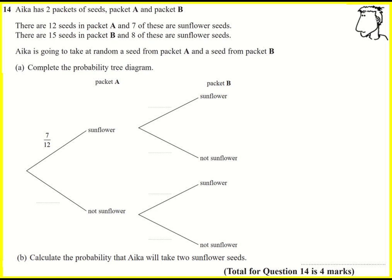Acre has two packets of seeds, packet A and B. There are 12 seeds in packet A and seven of these are sunflower seeds. What this means is the probability of picking a sunflower seed is 7 over 12.